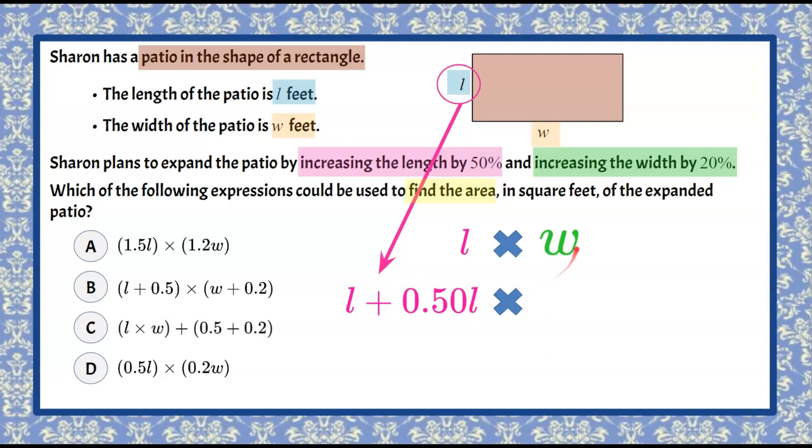Then we're going to multiply by the width. So now we have our width where we're going to start with our original width and we're going to add 20% of that width to the original.